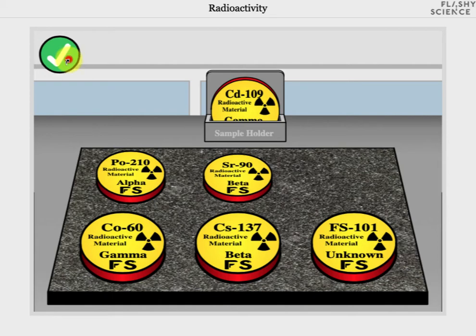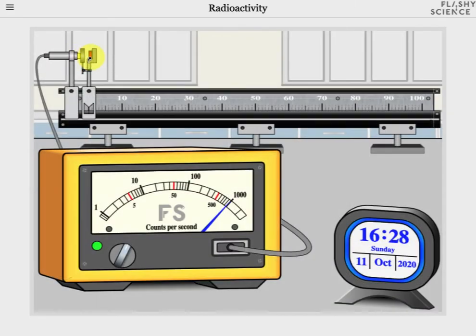If I click on the confirm button then the source is moved to the main screen and the signal on the Geiger-Müller tube meter has now increased.